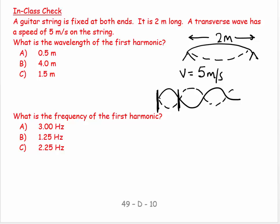And the simplest pattern is one node at each end. That's the thing about a guitar string: it has a node at each end. So we recognize, oh, this is half of a wavelength. There's a wavelength.